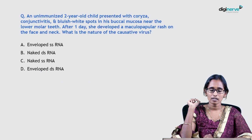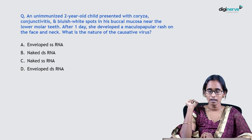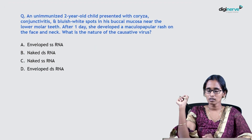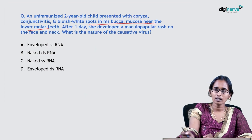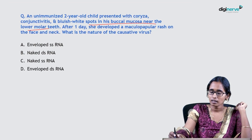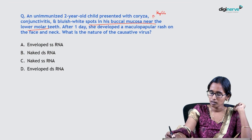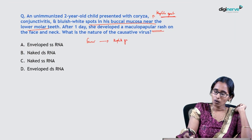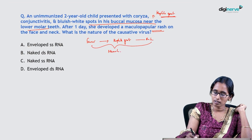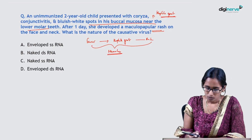Next question: An unimmunized 2-year-old child presents with coryza, conjunctivitis, and bluish-white spots in the mucosal area near the lower molar tooth. After one day she developed a maculopapular rash on the face and neck. The patient is having bluish-white spots — nothing but Koplik spots. Fever followed by Koplik spots followed by rashes points towards the patient having measles infection.